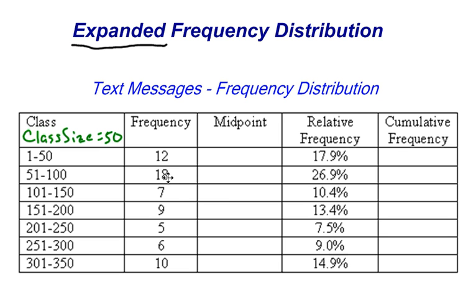So in this case we have 12 plus 18 plus 7 plus 9 plus 5 plus 6 plus 10 is 67, so our total down here is 67. And 12 out of 67 is 17.9 approximately, 17.9 percent. And then 18 out of 67 is 26.9 percent, and 7 out of 67 is 10.4 percent, and we can continue until we got all of our percents, and that is relative frequency.